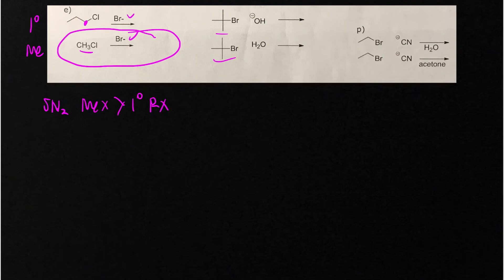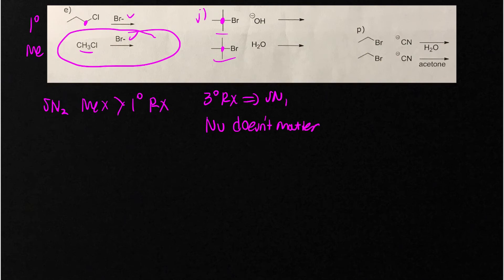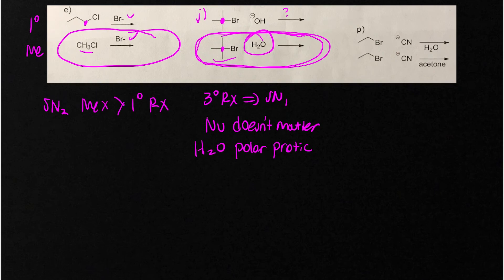In letter J, we have a tertiary alkyl halide, which means it's SN1. For SN1, the nucleophile doesn't matter — it doesn't matter if the nucleophile is negative or neutral. We just want to look at the solvent. Water is a polar protic solvent, so it's going to make this reaction faster. The other solvent might be DMSO or something else, so the bottom reaction with water is going to be faster.